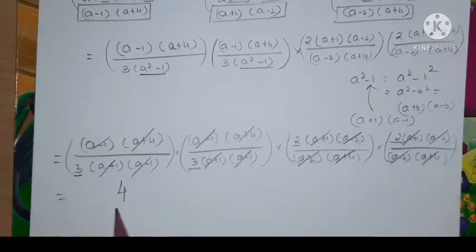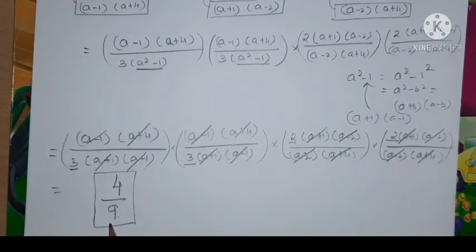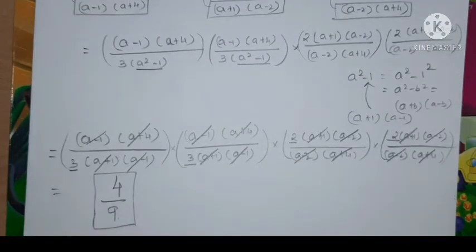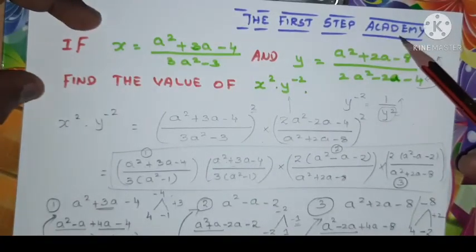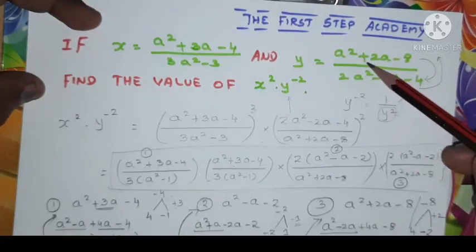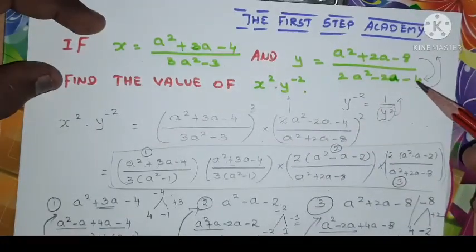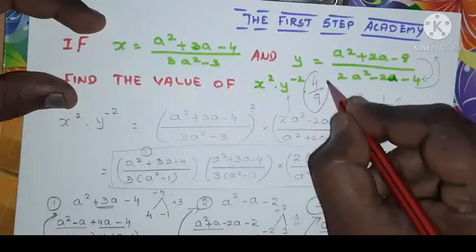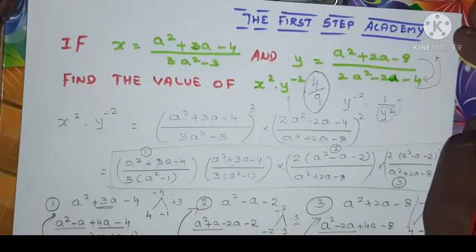We are left only with the constants: 2 and 2 in the numerator giving 4, and 3 and 3 in the denominator giving 9. So the value of x² · y⁻² is 4/9. If x = (a² + 3a - 4)/(3a² - 3) and y = (a² + 2a - 8)/(2a² - 2a - 4), the value of x² · y⁻² is 4/9. Hope you understand. Thank you for watching. This is First Step Academy Learn and Grow Educational Medium.